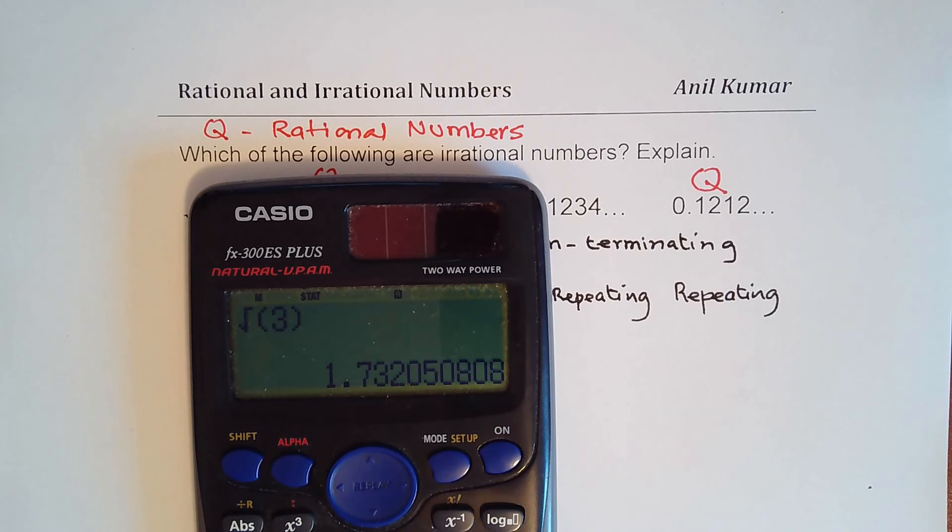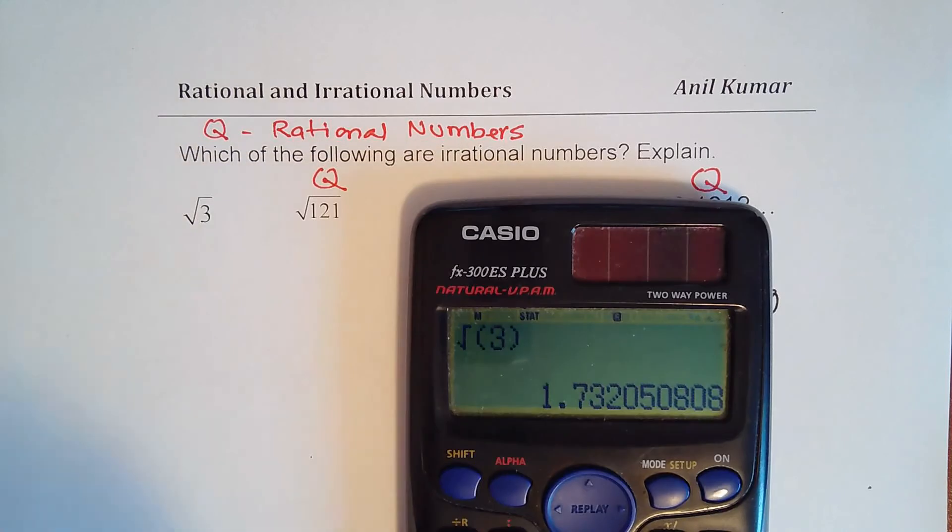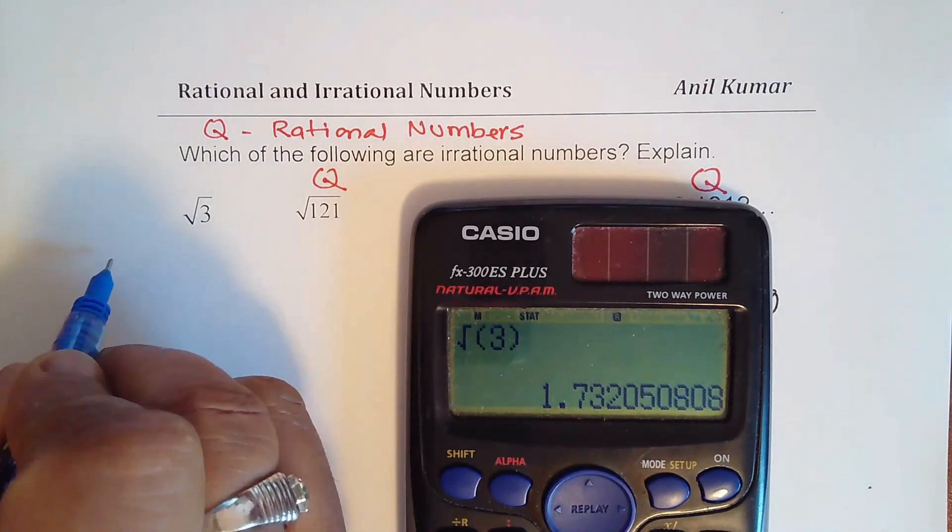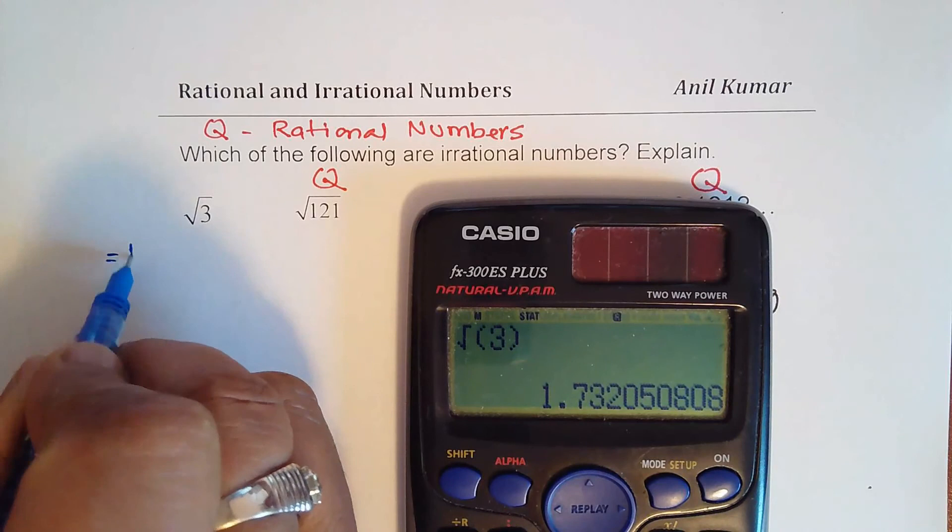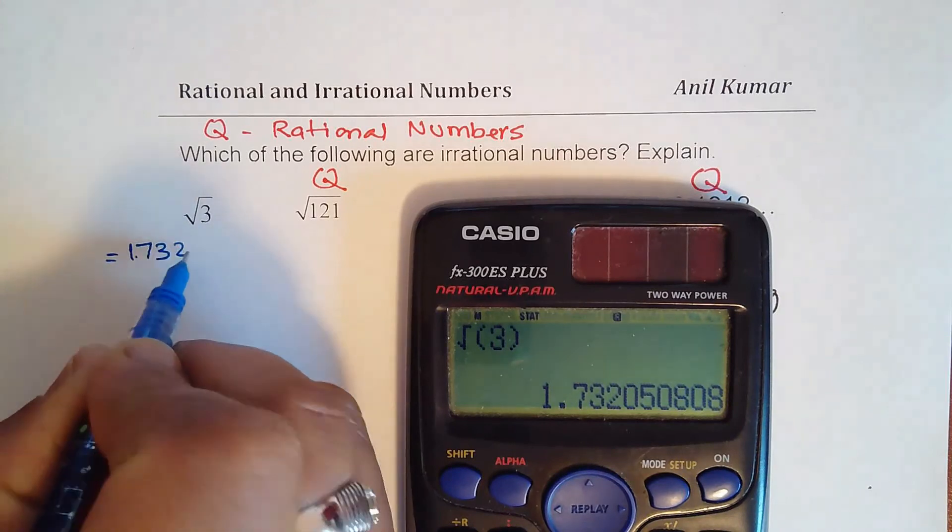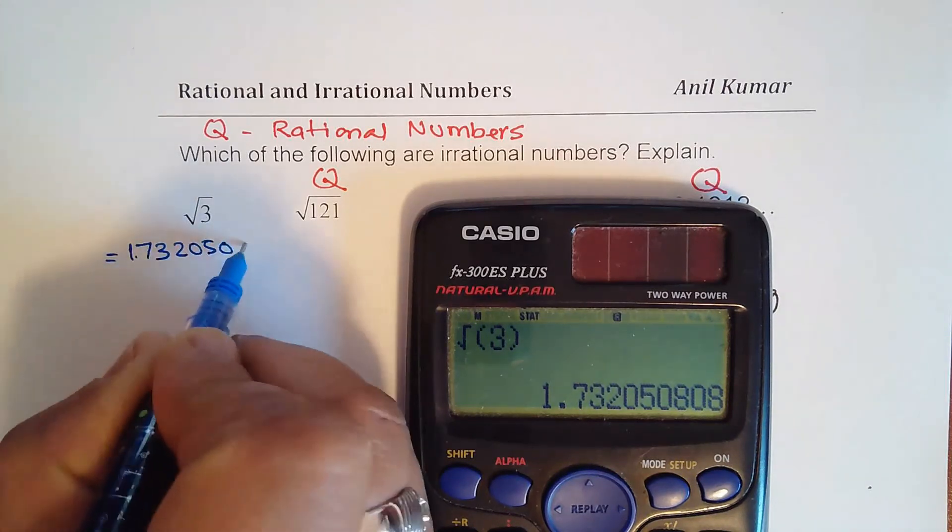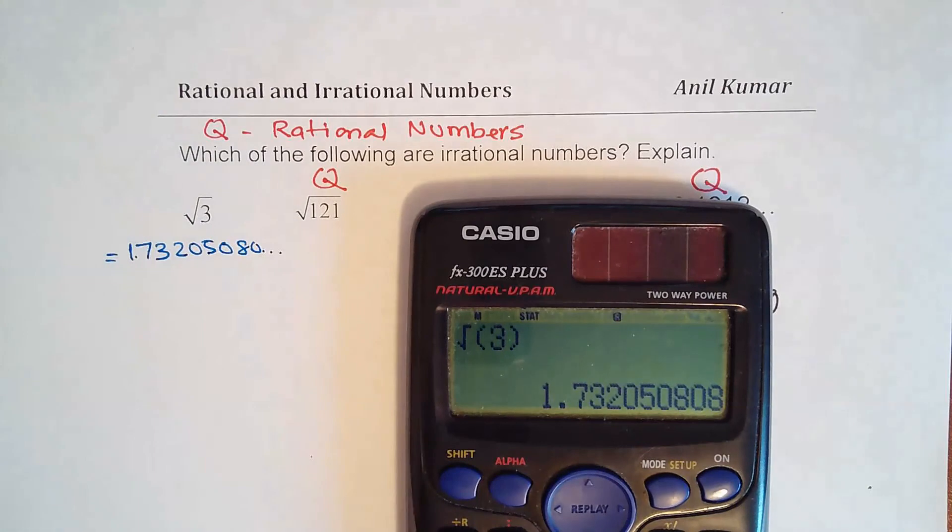As you can see, the numbers after decimal definitely go on and on and there is no pattern in them, right? So let me write this number. Square root of 3 is equal to 1.73205080 and so on. So they are non-terminating decimal numbers which do not repeat. They don't have any pattern.